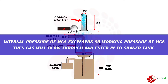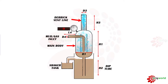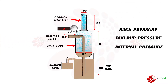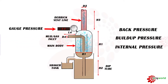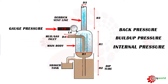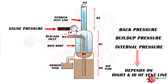Whenever the internal pressure of the MGS exceeds the working pressure of the MGS, the gas will enter into the shaker area — and we never want gas at the shaker area because our crew is working there. Now let us understand what dimensions the back pressure, build-up pressure, or internal pressure — gauge pressure in short — depends on. If the ID of the vent line is reduced, the gauge pressure will increase. If the height of the vent line is increased, the gauge pressure also increases. So the internal pressure of the MGS depends on the height and ID of the vent line.